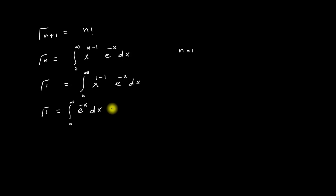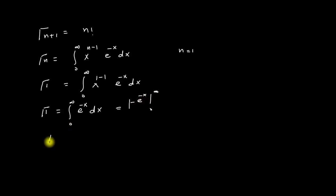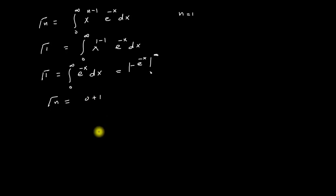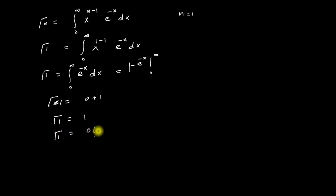Integrating, we get minus e to the power (minus x) with limits from zero to infinity. Applying the upper and lower limits, Gamma(1) equals zero plus 1, so Gamma(1) equals 1. We can also write this as Gamma(1) equals 0 factorial.